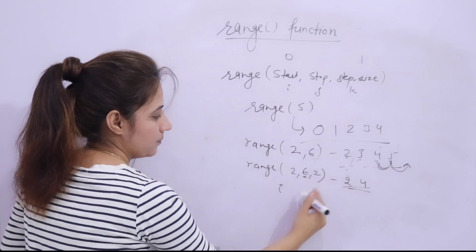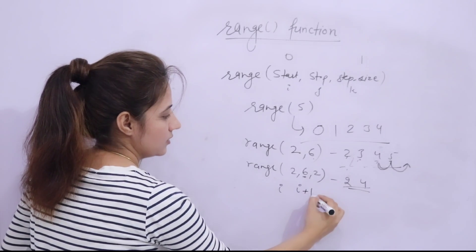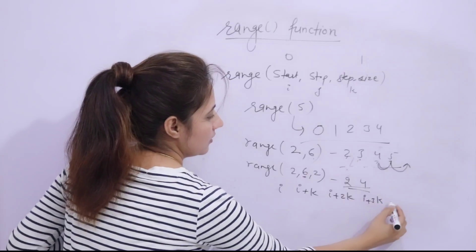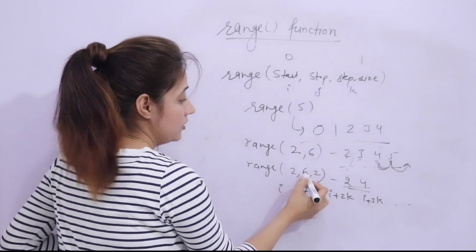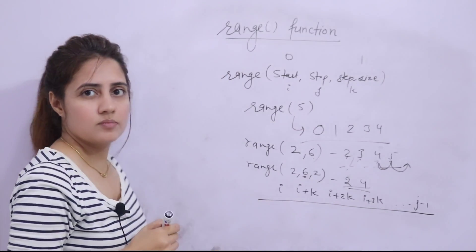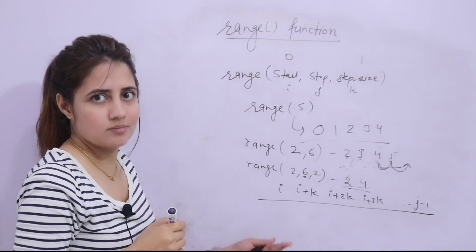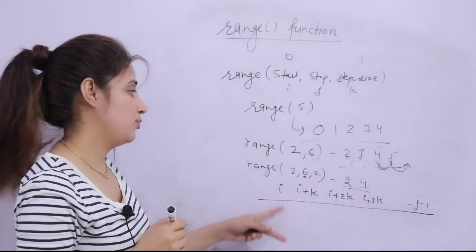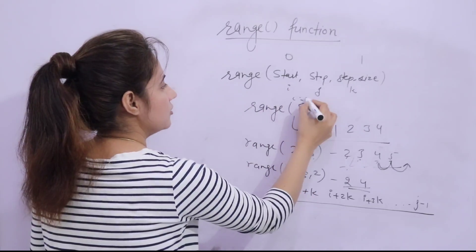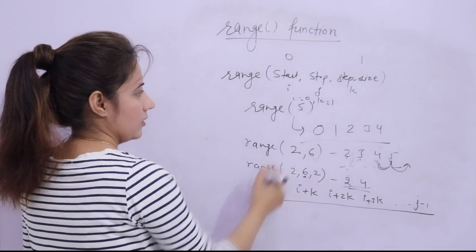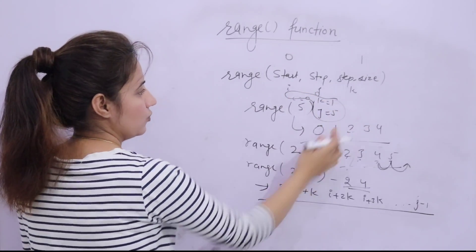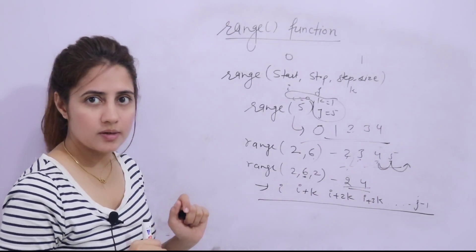The general formula: if start is i, stop is j, and step size is k, then it will print i, then i+k, then i+2k, then i+3k, and so on until j minus 1. This is the general formula when you provide all three things, and obviously it also works for the default cases where i is 0 and k is 1.